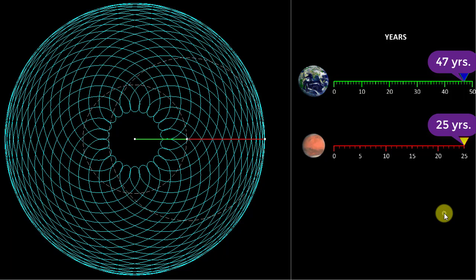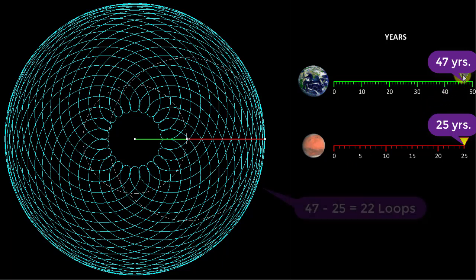Previously we saw, after 15 earth years and 8 Mars years, we had 15 minus 8, 7 loops. So, here we have 47 earth years and 25 Mars years. So, 47 minus 25, 22 loops will be there. You can pause the video and count it yourself.